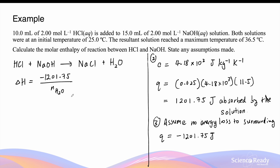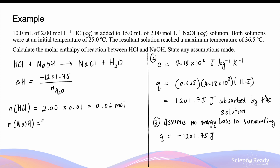We must first determine the number of moles of each reactant. Moles of HCl = 2 mol/L × 0.01 L = 0.02 mol. Moles of NaOH = 2 mol/L × 0.015 L = 0.03 mol. Since acid and base react in a 1:1 ratio, HCl is the limiting reagent. The ratio between acid and water is also 1:1, so the moles of water produced = 0.02 mol.